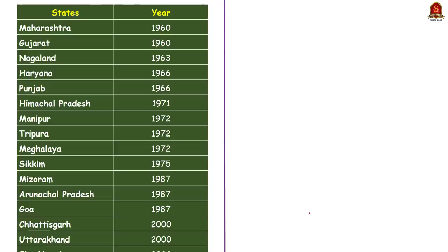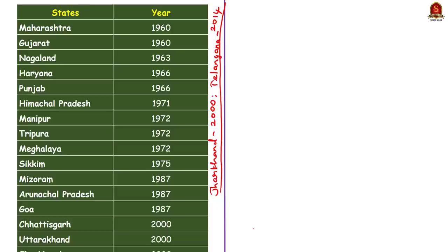Here is the table of states formed after 1956 with the years they were formed. In 1960: Maharashtra and Gujarat. 1963: Nagaland. 1966: Haryana and Punjab. 1971: Himachal Pradesh. 1972: Manipur, Tripura, and Meghalaya. 1975: Sikkim. 1987: Mizoram, Arunachal Pradesh, and Goa. 2000: Chhattisgarh, Uttarakhand, and Jharkhand. 2014: Telangana. A statement may be asked in prelims giving the year on which a state is formed, so go through this table carefully. And with this we have come to the end of this discussion.